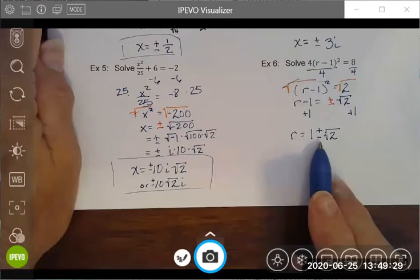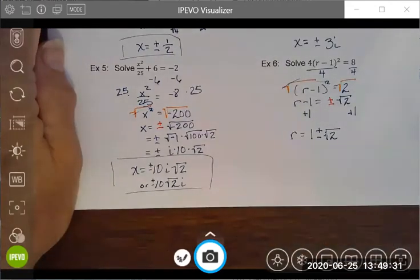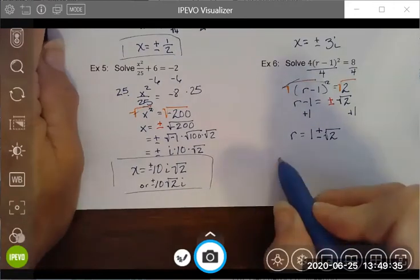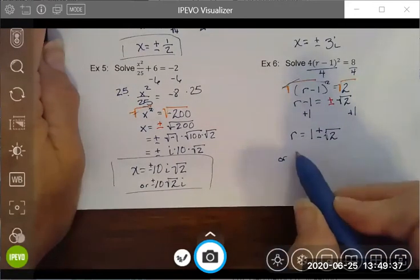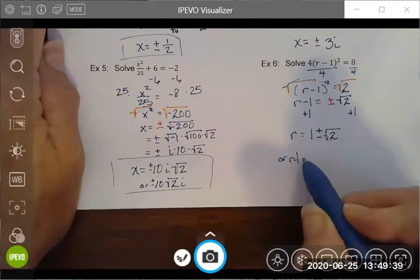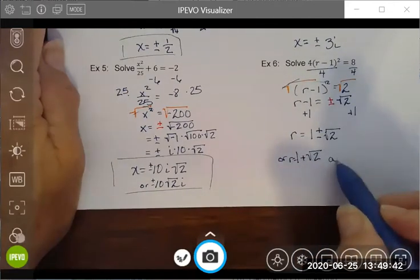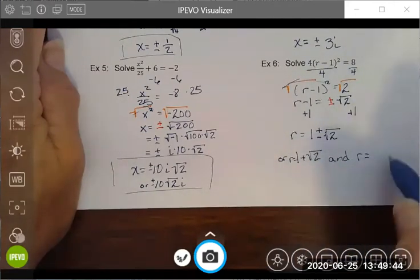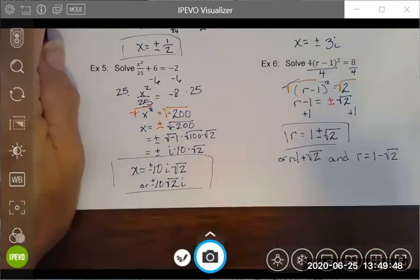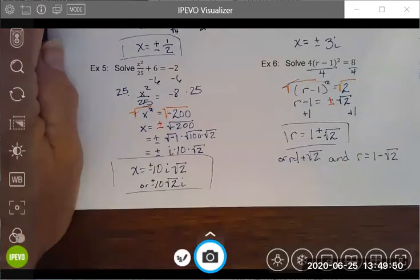I'm going to put the one in front because that is traditionally how you will see it. You could have written it as r equals one plus square root two and r equals one minus square root two, but you'll find that most people prefer doing a shorter version.